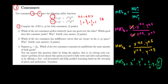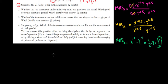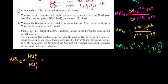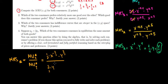Let's do the same logic for consumer B. The marginal rate of substitution for consumer B equals the marginal utility with respect to X divided by the marginal utility with respect to Y. Differentiating X to the power 1/3 with respect to X gives 1/3 times X to the power minus 2/3, times the constant Y to the power 2/3. For the denominator, differentiating Y to the power 2/3 with respect to Y gives 2/3 times Y to the power minus 1/3, times the constant X to the power 1/3.